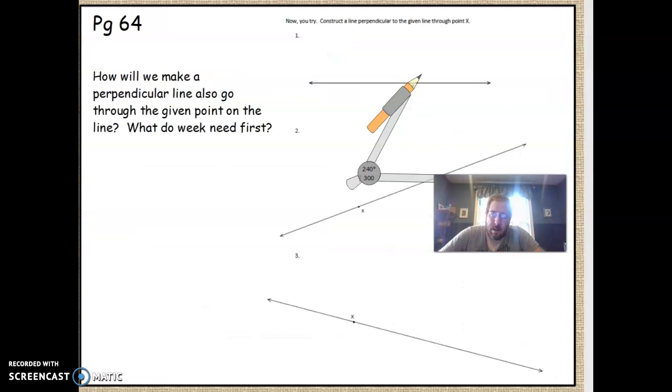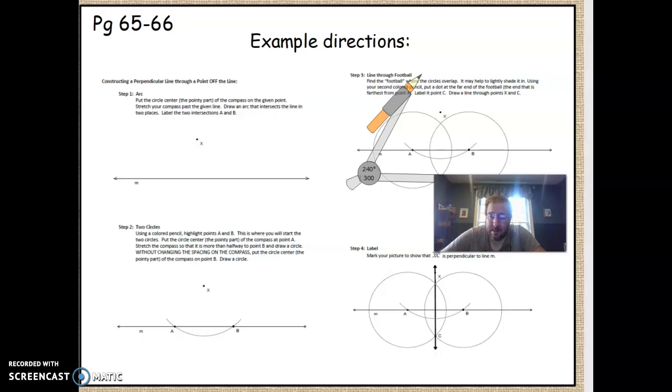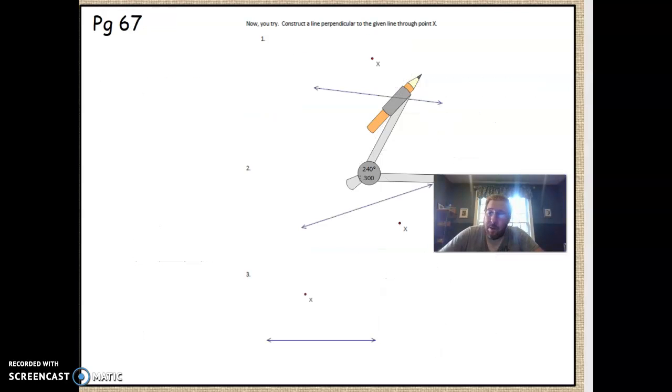Once again, this is going to be doing perpendicular bisectors, just like the last video. But the only difference is this time we want to go through a specified point. We're given this line and a point that's not on the line. Now what I need to do is find two points on the line that are equal distance to the point that is given. I'm going to make this a little bit smaller. What I'm going to do first is put my fixed point on the given point, and I'm going to make an arc so that it intersects my line twice.